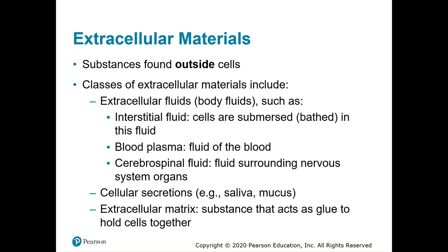We also have blood plasma, the fluid of the blood — when you squeeze a wound and all the red blood is gone, the yellowish clear fluid remaining is blood plasma. The cerebrospinal fluid surrounds the nervous system organs and acts as cushioning for the brain between the brain and skull, and the same goes for the spinal cord.